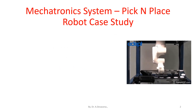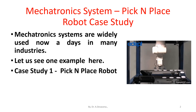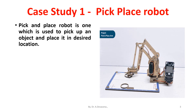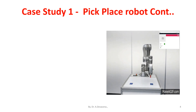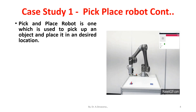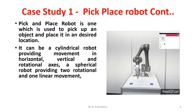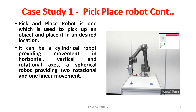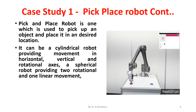Mechatronics systems are widely used nowadays in many industries. Let us see one example here — KSTD 1, Pick and Place Robot. A pick and place robot is the one which is used to pick up an object and place it in the desired location. It can be a cylindrical robot providing movement in horizontal, vertical and rotational axes. A spherical robot providing two rotational and one linear movement. An articulate robot or a SCARA robot — a fixed robot with three vertical axis rotary arms.